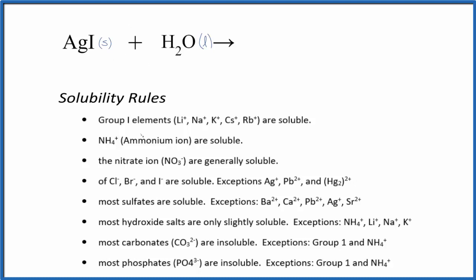The solubility rules will help us figure that out. So we go down, and here's iodide ion. In general, compounds are soluble if we have the iodide ion, except a few of them, and silver is one of the exceptions.